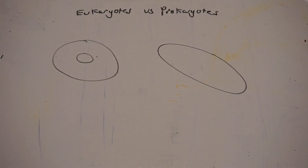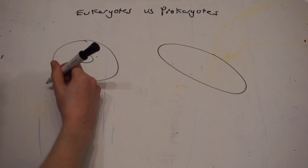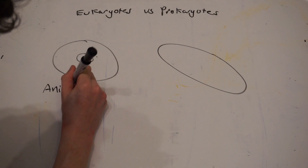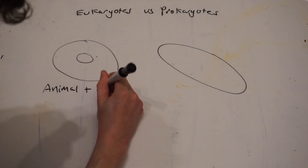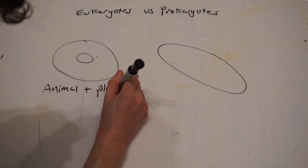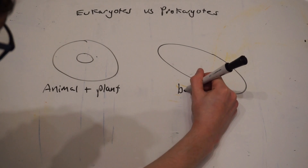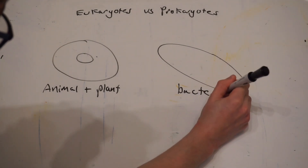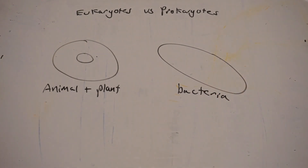A eukaryote is an organism which is made up of eukaryotic cells, and a prokaryote is a prokaryotic cell such as a single-celled organism like a bacteria. Now plant and animal cells are both eukaryotes but they do have some similarities and differences between them, because they have slightly different subcellular structures, which are the small structures found within the cell.